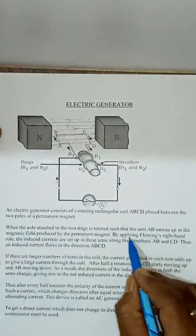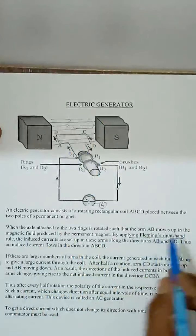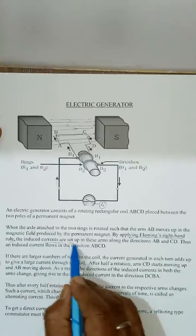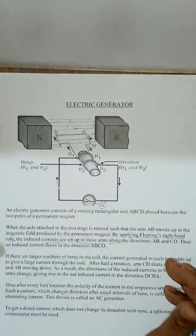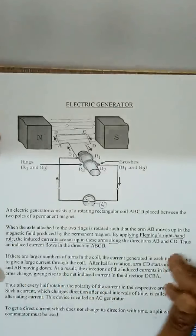By applying Fleming's right-hand rule, the induced currents are set up in these arms. About Fleming's right-hand rule, I have already explained to you in the previous videos.